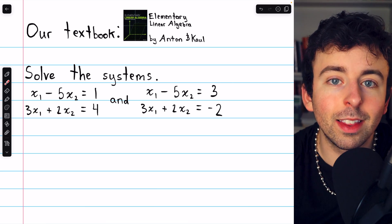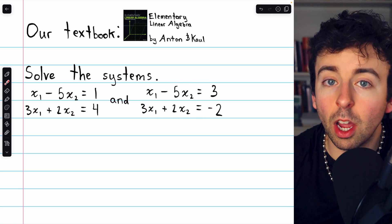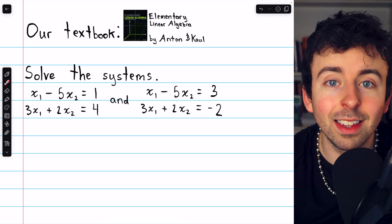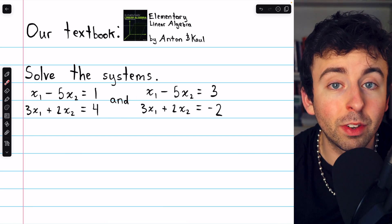So if we were to construct the augmented matrix for this system and for this one, the coefficient matrix would be exactly the same. The coefficients here are 1, 3, negative 5, 2, 1, 3, negative 5, 2.